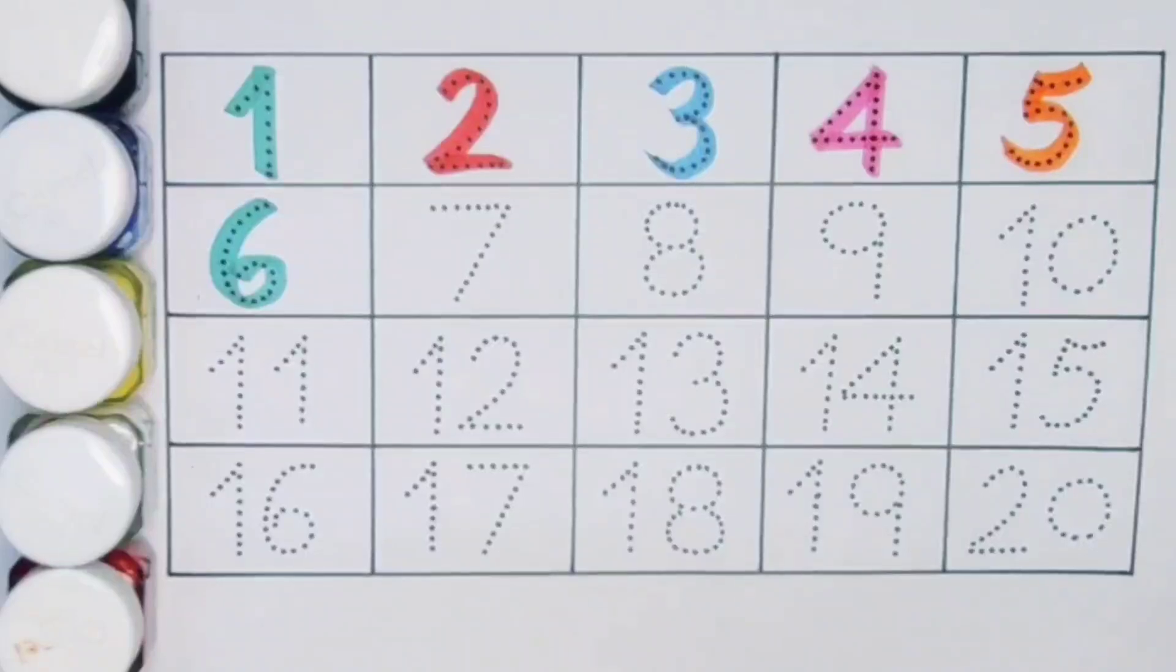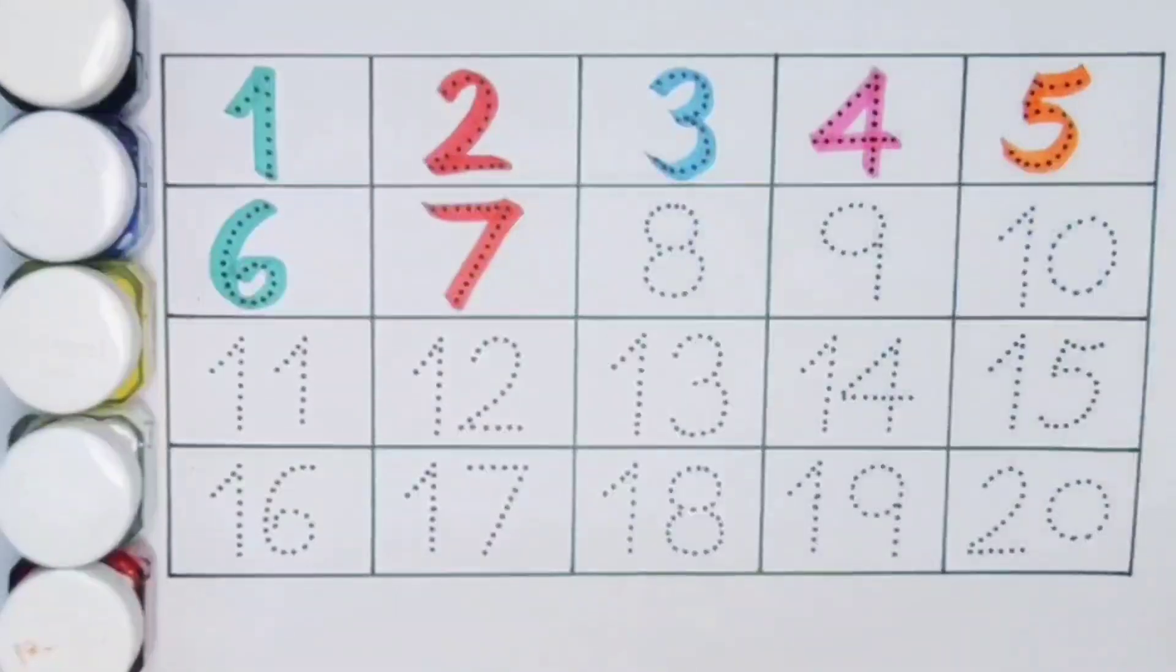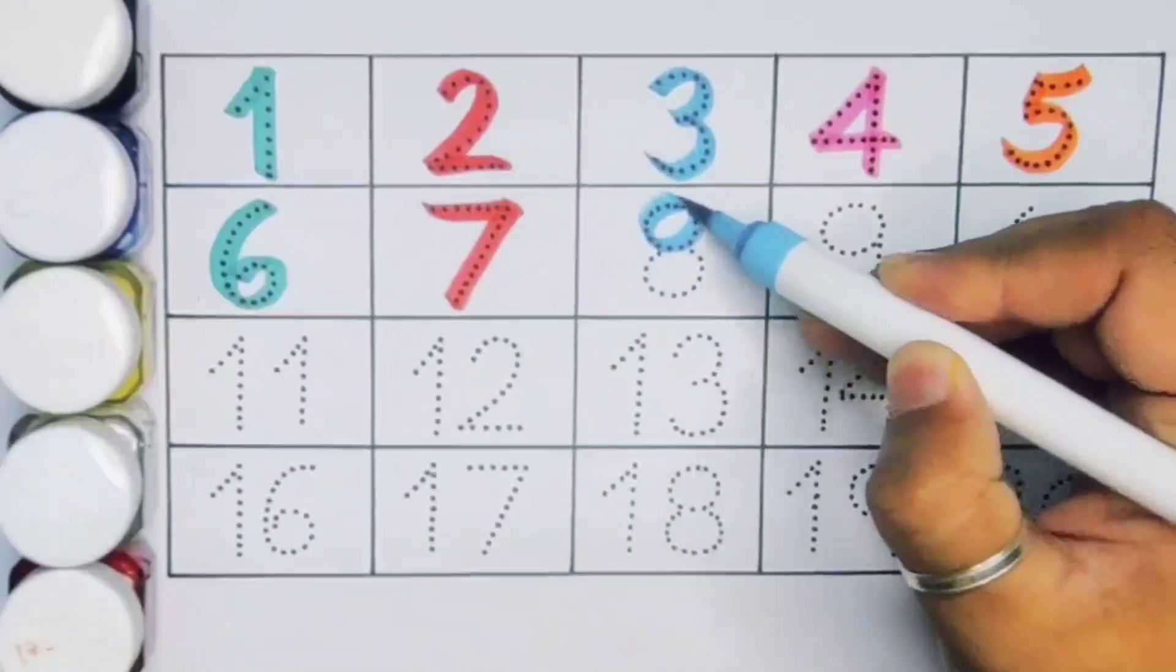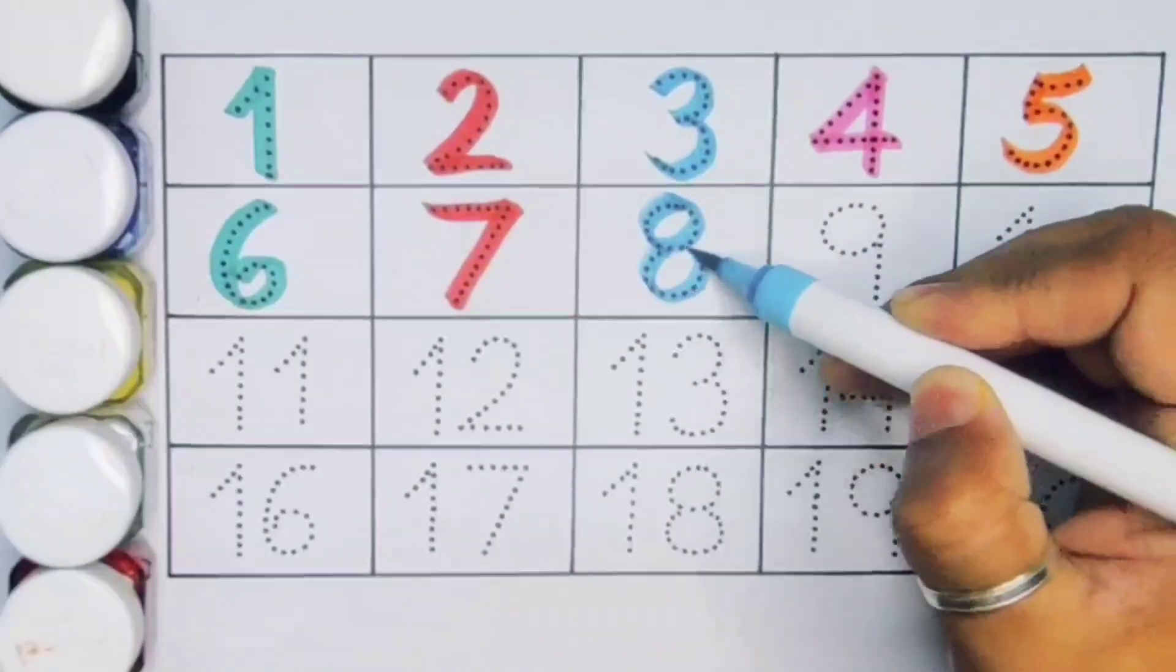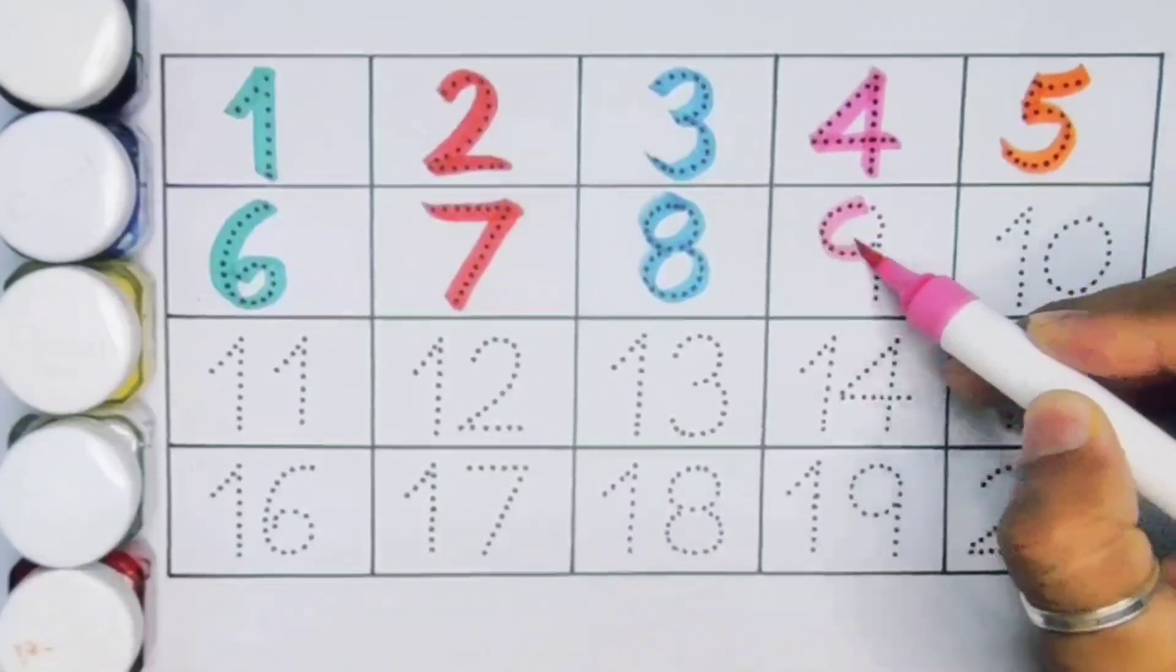Next 7, number 7. Next kids 8, number 8. Next kids 9, number 9.